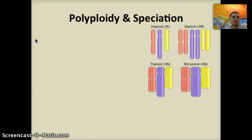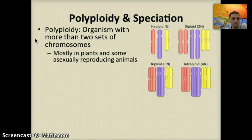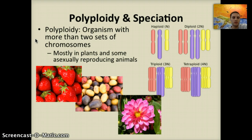One of the last topics in this video is polyploidy and speciation. Polyploidy is an organism with more than two sets of chromosomes. It usually occurs most often in plants and some asexually reproducing animals. Strawberries are a good example — they are actually octoploid, meaning they have eight copies of their DNA. It can result from hybridization between different species, or when chromosomes duplicate in preparation for meiosis but don't separate, creating a diploid gamete. Strawberries, potatoes, and dahlias are examples of plants that represent polyploidy.